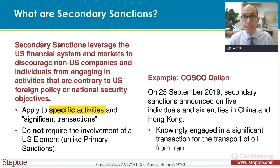A recent example that you might be familiar with is COSCO Dalian. That's one of two subsidiaries of COSCO, which is a major Chinese shipping line, that were put on the SDN list for engaging in shipments of petroleum from Iran. That was in September 2009. It made lots of headlines, and that's something that you can find on OFAC's website.